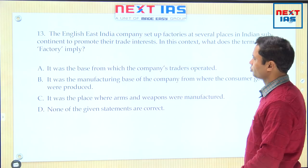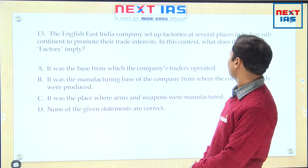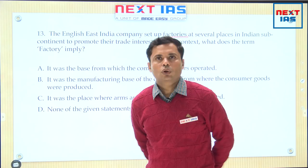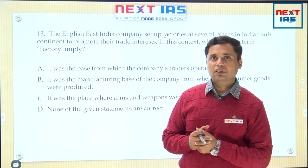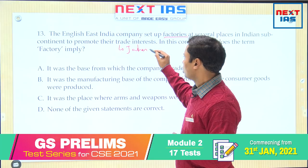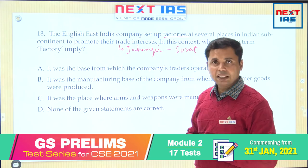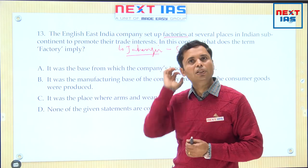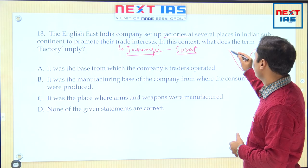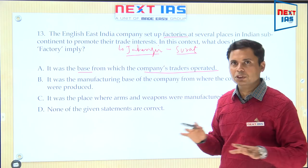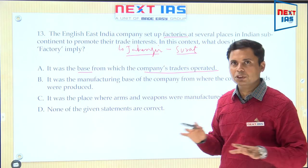Next question, number 13: the English East India Company set up factories at several places in the Indian subcontinent to promote their trade interests. What does the term 'factory' imply? Factories in modern times are places where production or manufacturing takes place, but in the early history of the East India Company when they came to India — the English East India Company received permission from Jahangir to establish a factory at Surat; Captain William Hawkins visited the court of Jahangir seeking this permission. In the early history of the Company, whenever the word 'factory' is used, it refers to a trading depot, a trading place — the base from where the Company's traders operated, not a production facility.